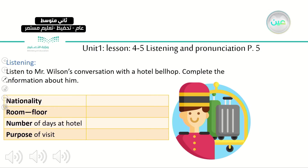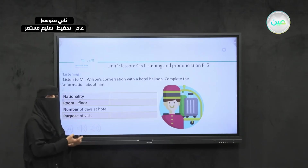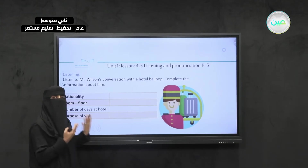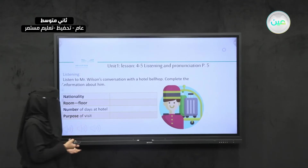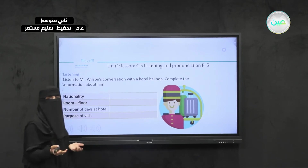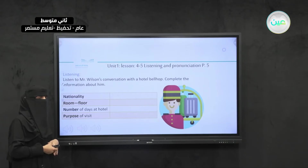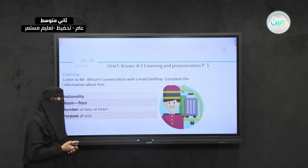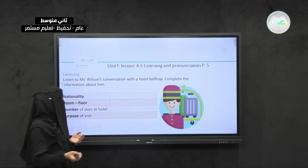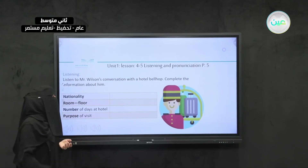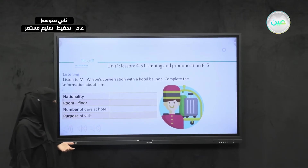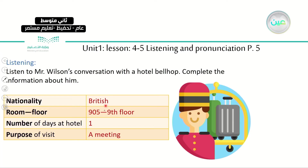You have listened to the conversation twice. You managed to answer all the questions — nationality, room number, number of days, and purpose of visit. Room number: 905. He is staying for one day — not a tourist, not visiting family. He is there to attend a meeting. His nationality: he is British. Room and floor number: 905 on the ninth floor. Number of days at hotel: one day. Purpose of visit: to attend a meeting. These are the answers for the listening part.